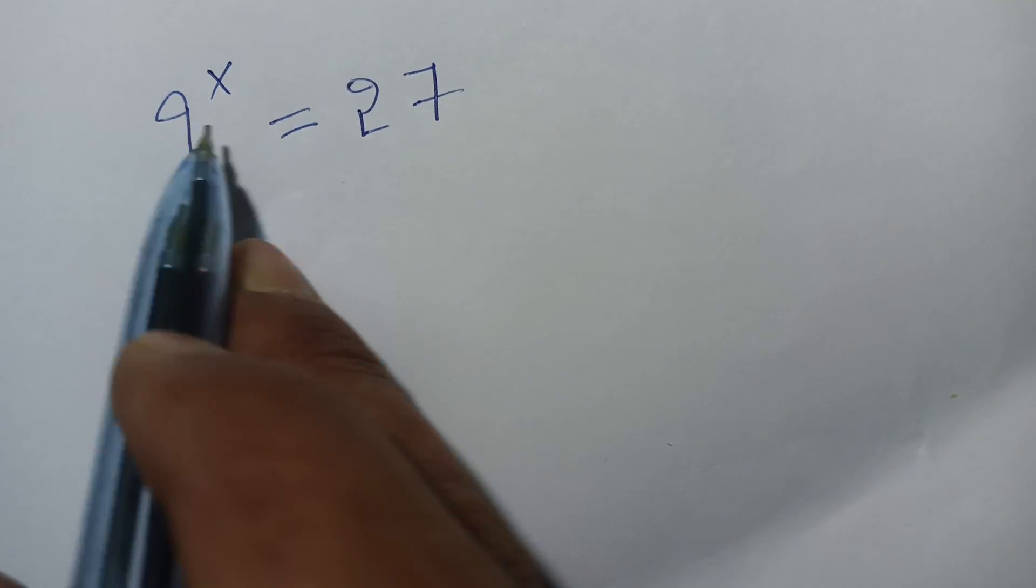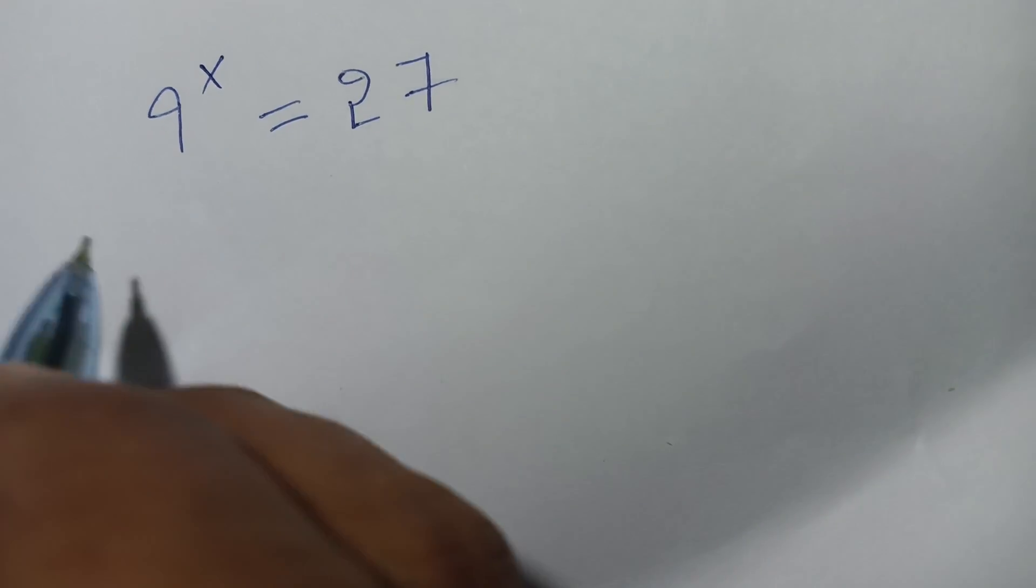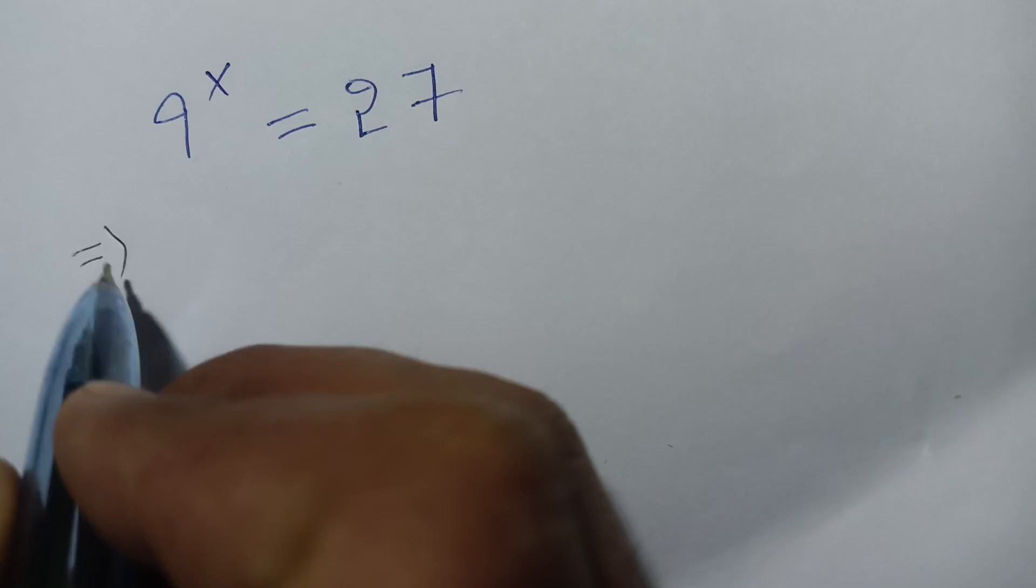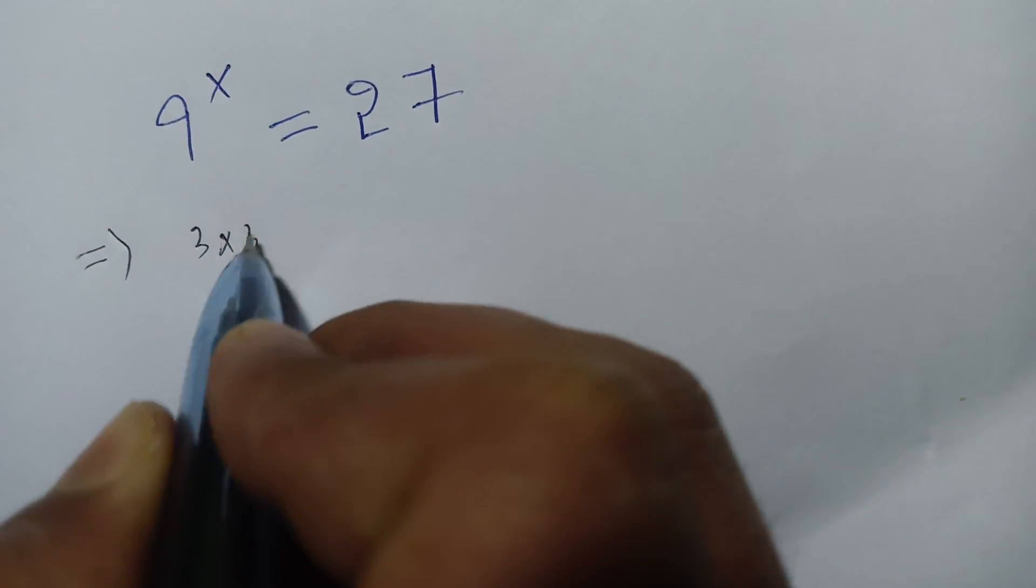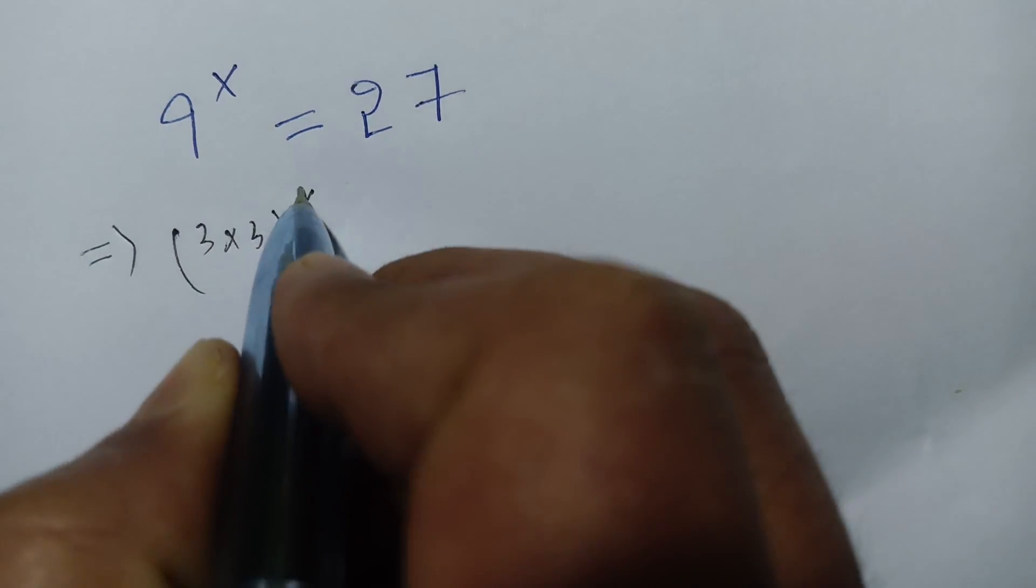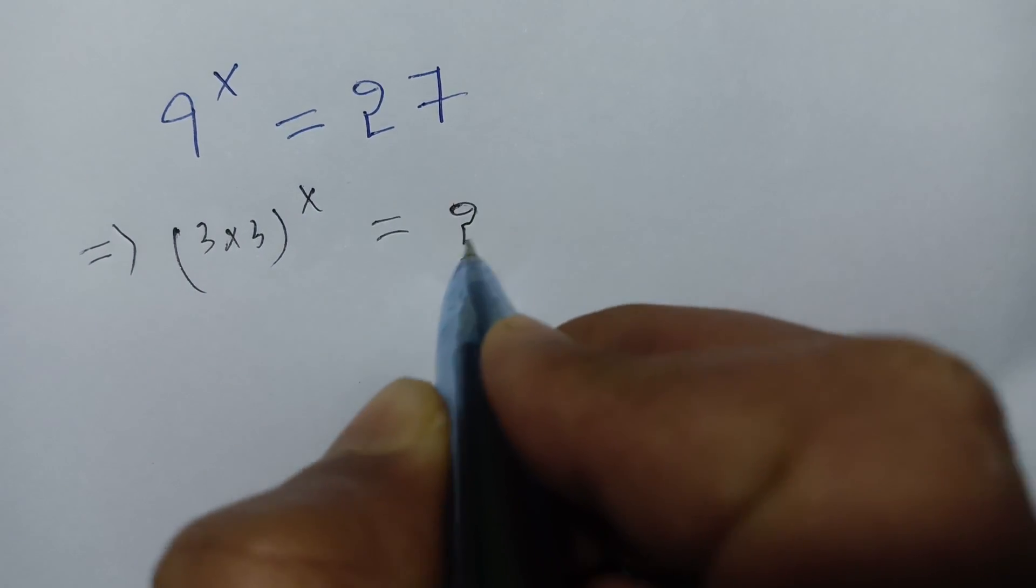How to solve 9 power x is equal to 27. We can write 9 to the x as 3 times 3 to the power x, which is equal to 27.